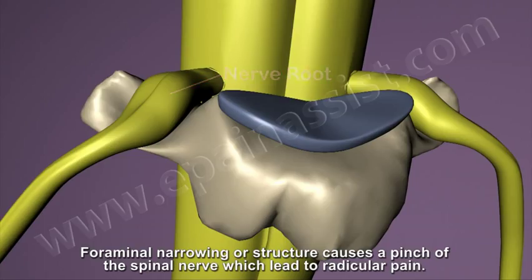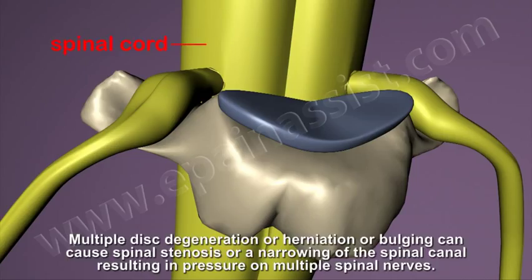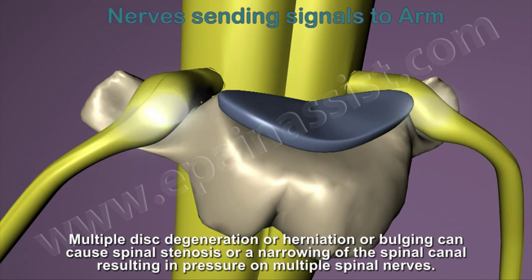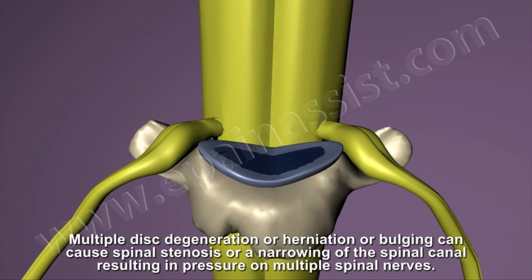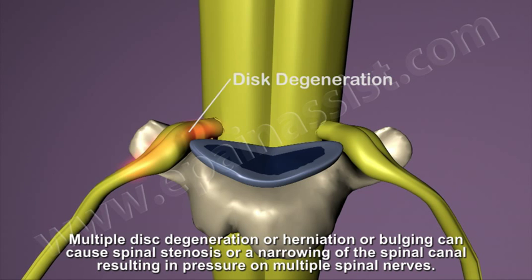Foraminal narrowing or stricture causes a pinch of the spinal nerve, which leads to radicular pain. Multiple disc degeneration and herniation or bulging can cause spinal stenosis, a narrowing of the spinal canal resulting in pressure on multiple spinal nerves.